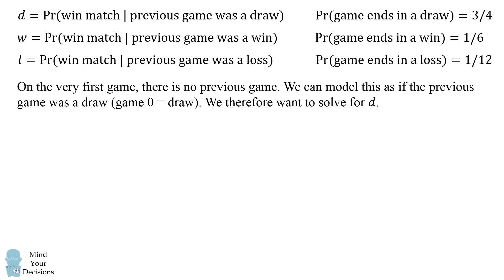On the very first game, there is no previous game. So we can model this as if the previous game was a draw, Game 0 is equal to a draw. We therefore want to solve for D because we want to solve for your probability of winning from the very beginning.